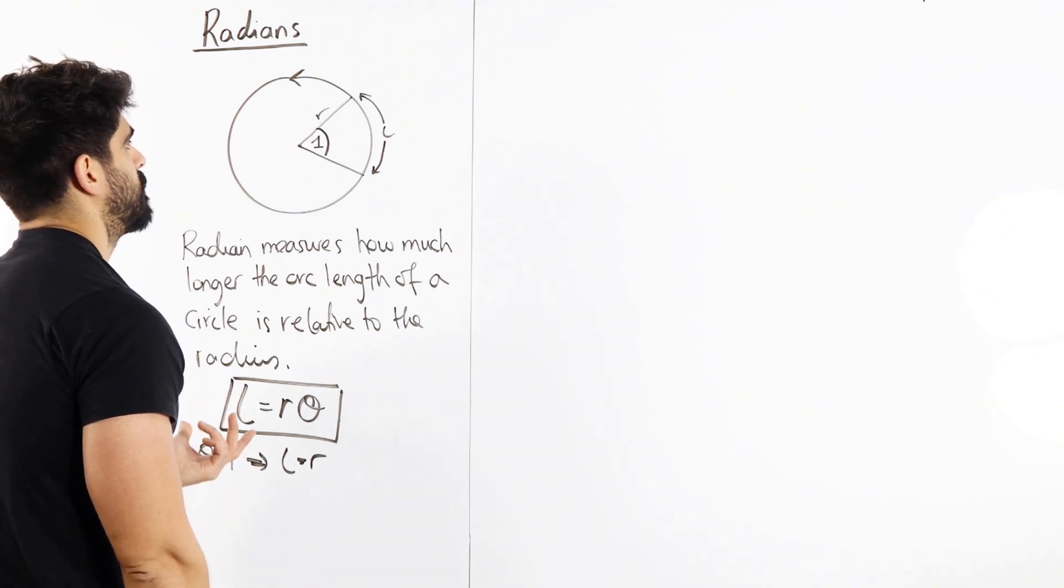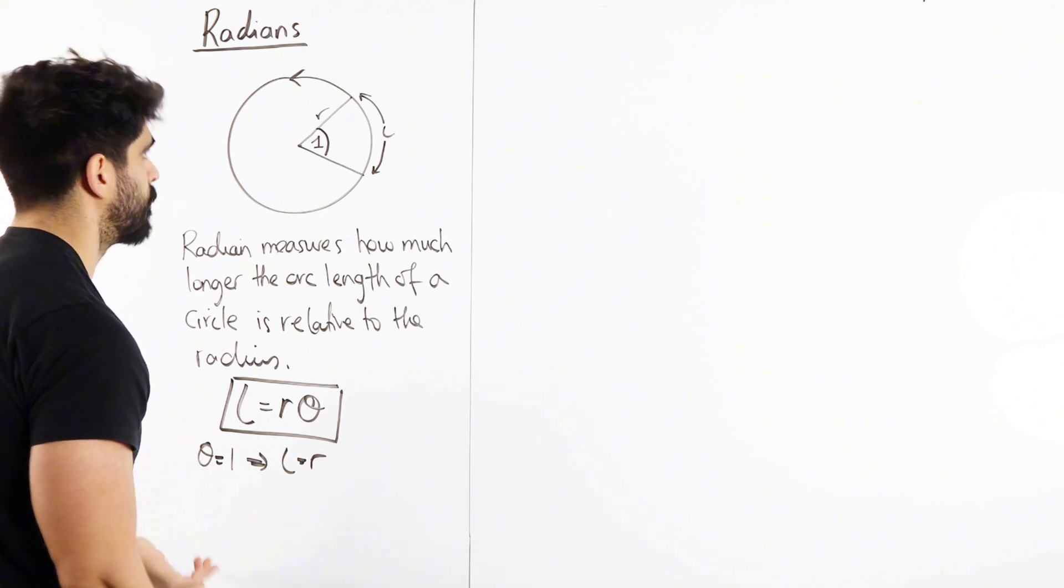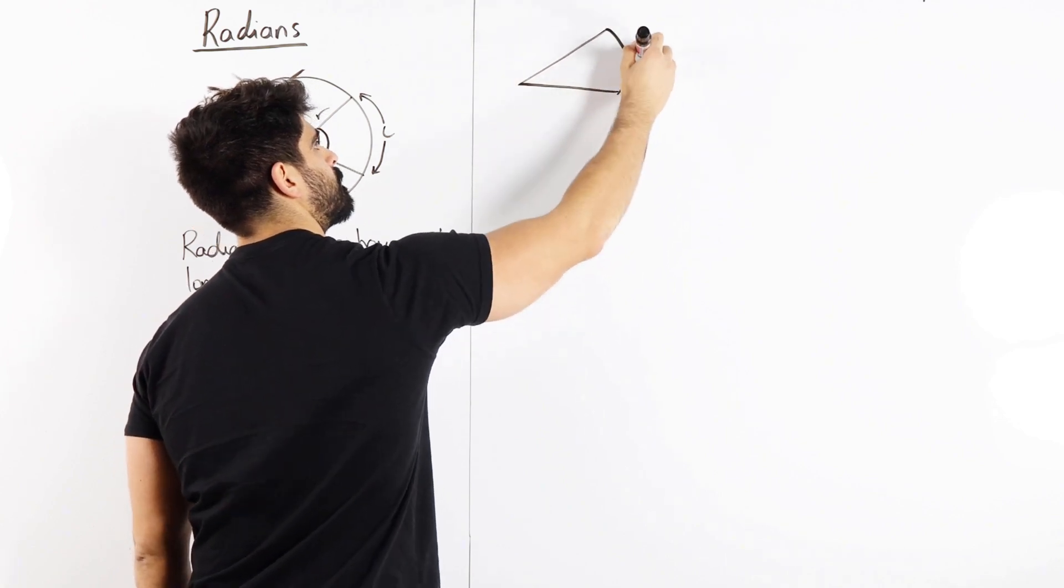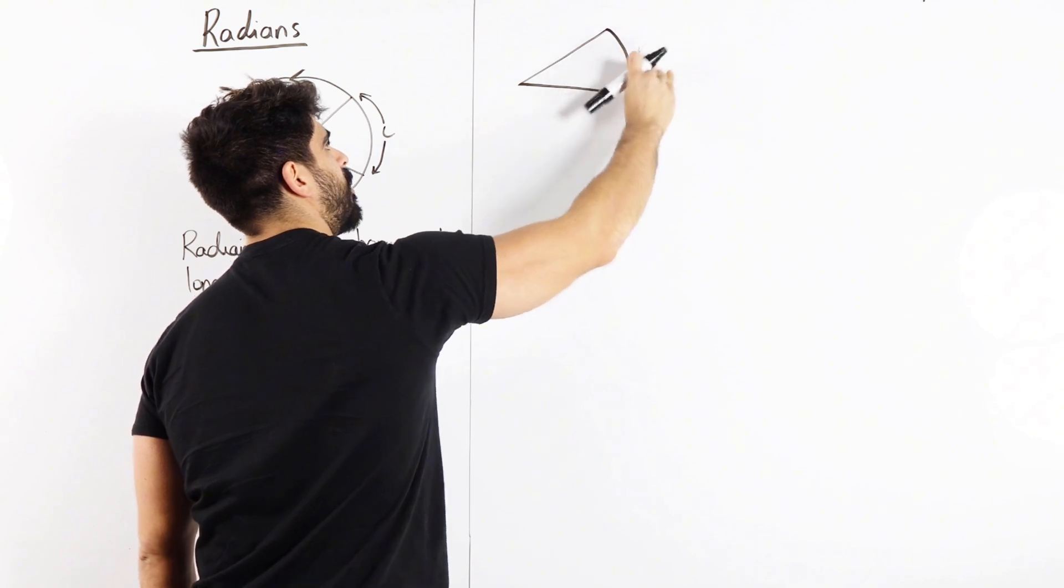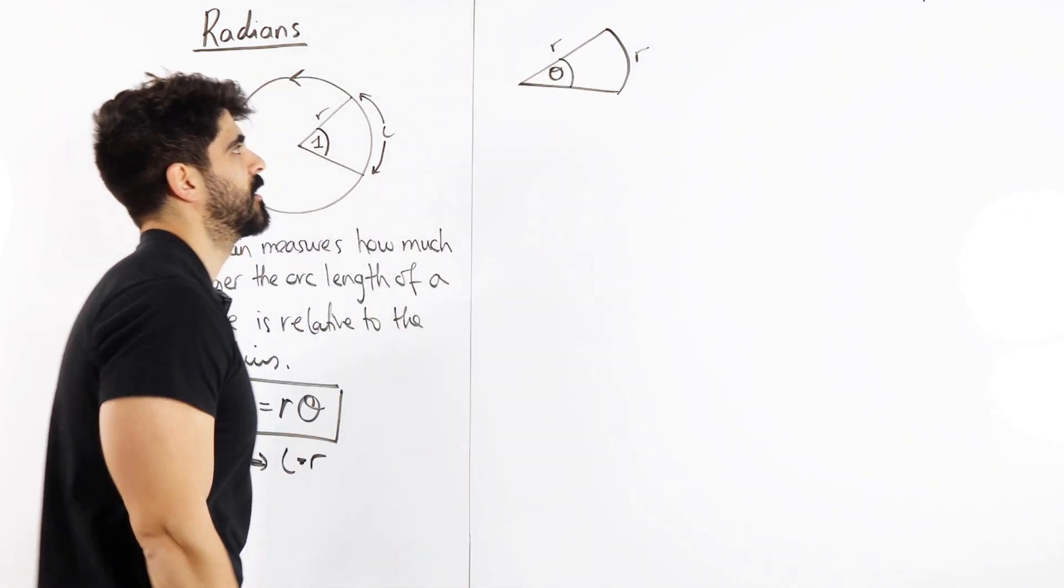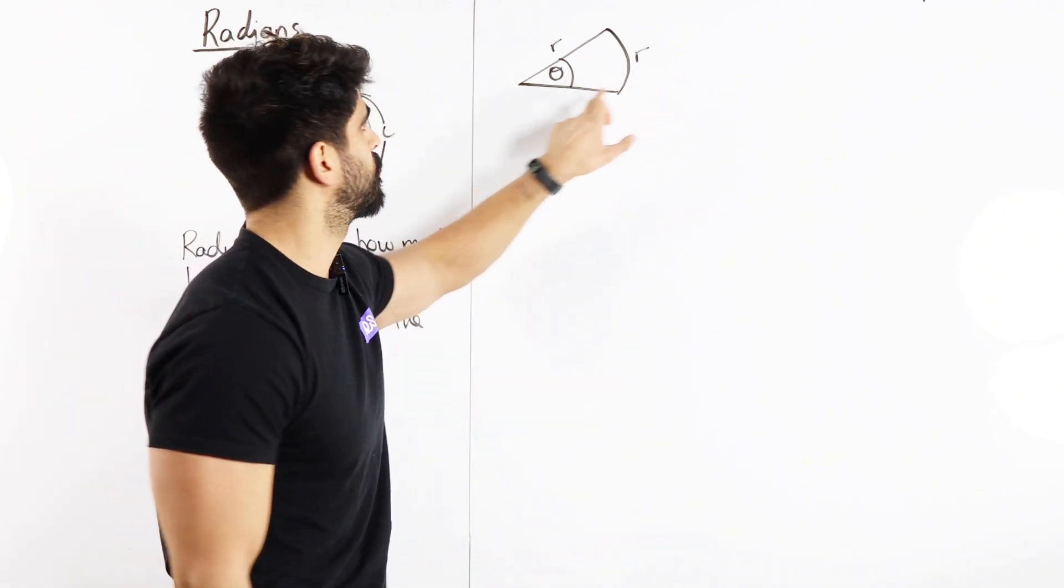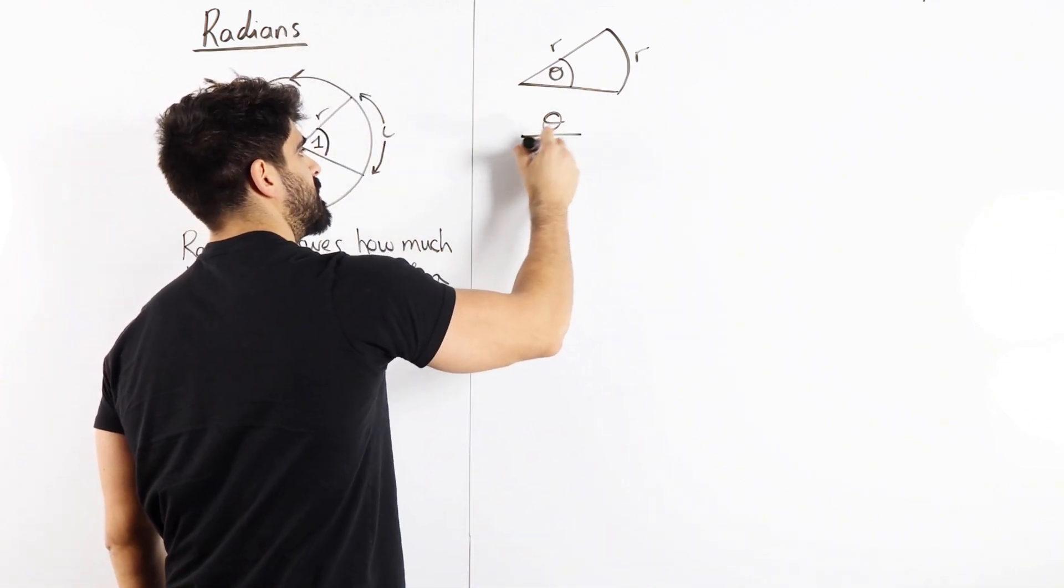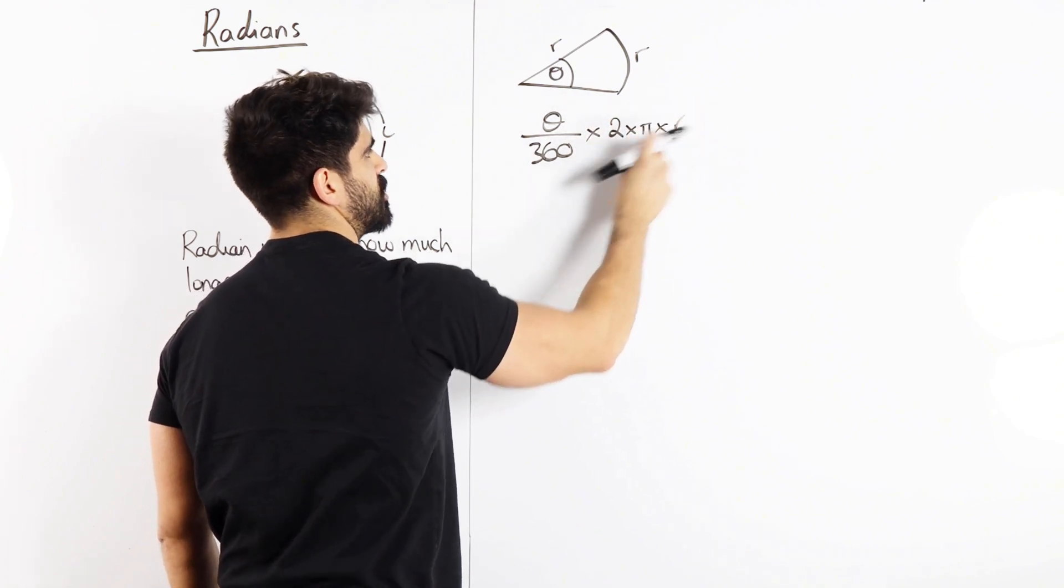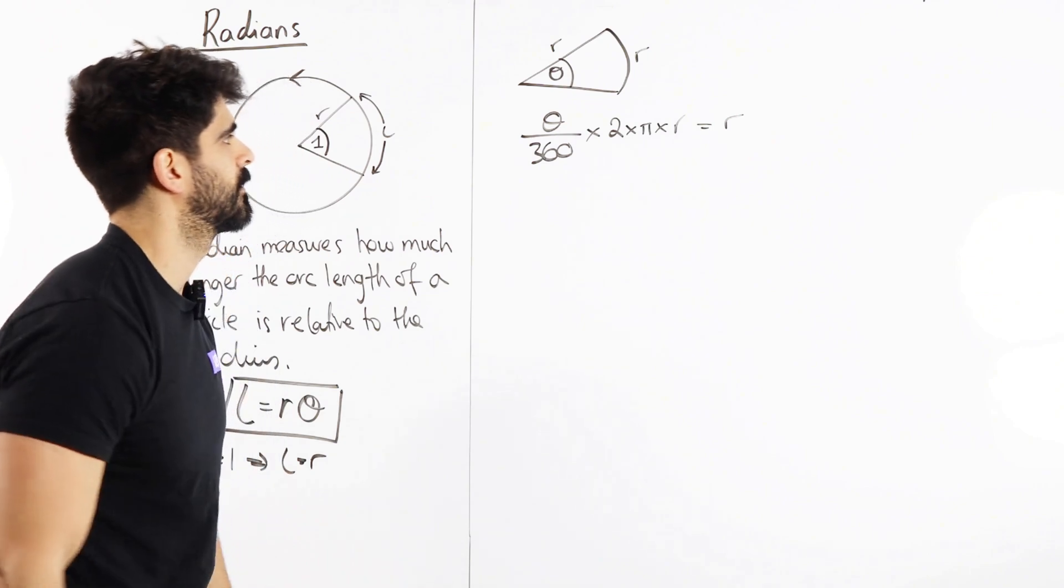If we're dealing with degrees, we could actually work out what one radian is then based on that situation. So if we're working in degrees, so we have this arc length here. If I call it r and call this r and this theta, what would that be in degrees? Now in GCSE, to work out the arc length, you'd work out the ratio between theta and 360 times 2 pi r, which is the circumference of a circle, and we're saying that equals r.